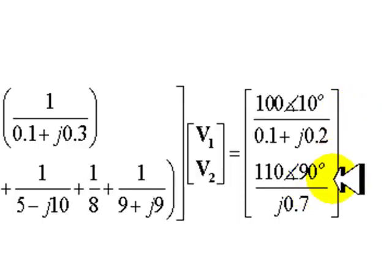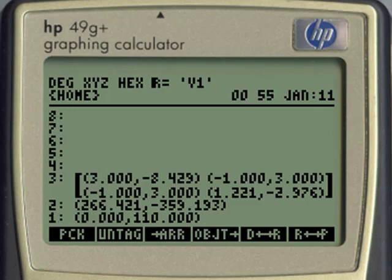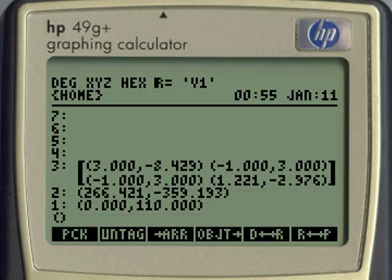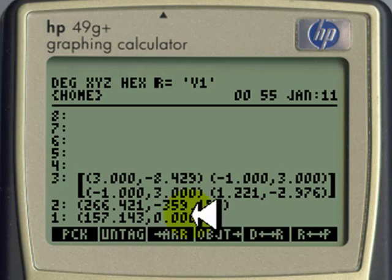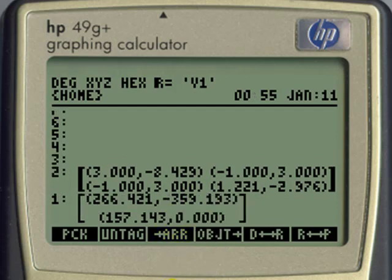110 with 90 degrees. Round parenthesis 110, alpha with 90 degrees. Enter. Divided by 0 space 0.7. Round parenthesis 0 space 0.7, division. Those are the two coefficients of that vector. What I do is I say enter two elements and make me an array with those two elements. And that is the vector on the right hand side.